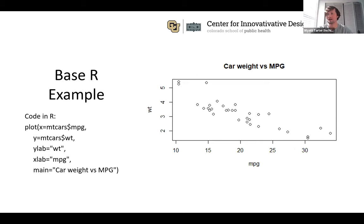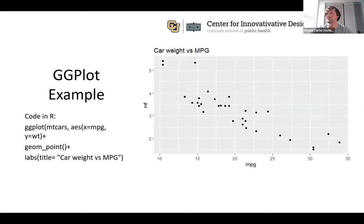Here's a base R scatter plot example. You can see the code just specifies the x-axis variable, the y-axis variable, and labels like `xlab` and `ylab`. It's pretty simple and spits out something that's pretty bare bones.